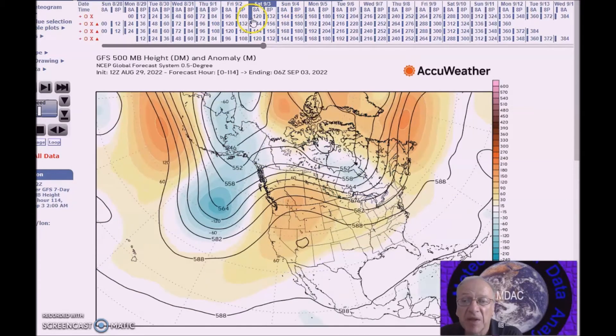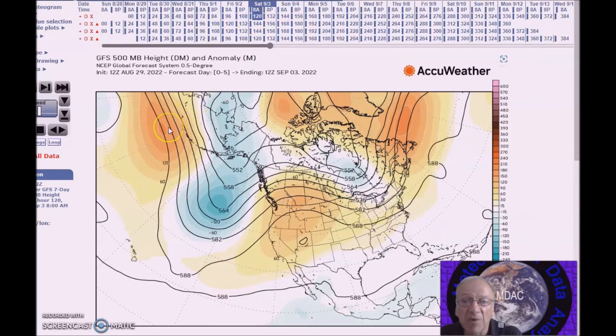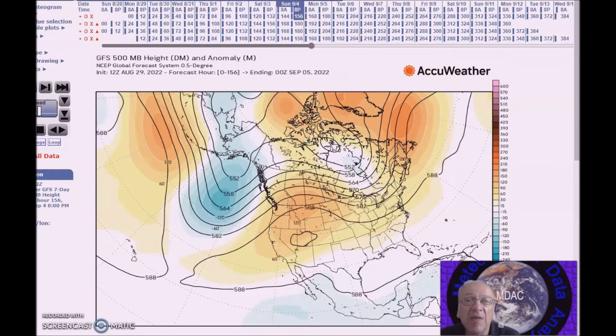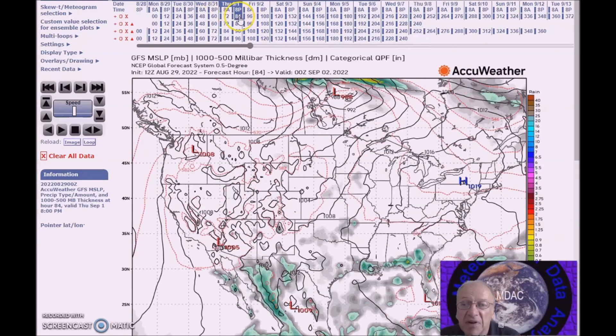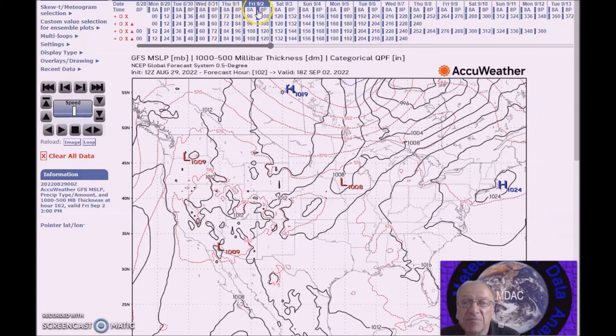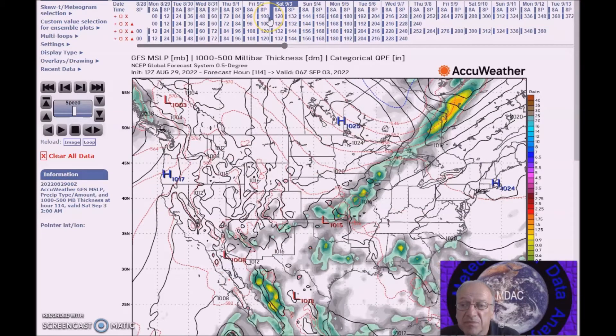We have a ridge here near the Aleutians, trough of the Northeast Pacific, ridge here in the west, trough here in the east. The western ridge will cause hot temperatures across the region, and we'll also have a front near the Gulf Coast states with several pieces of energy embedded, which will be the focus of rain which could be heavy.